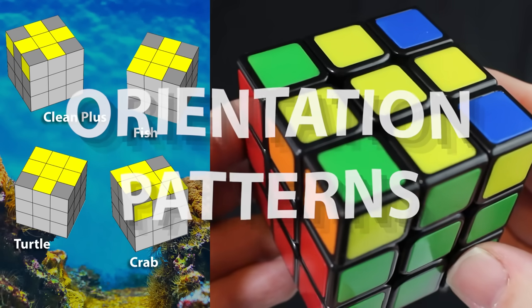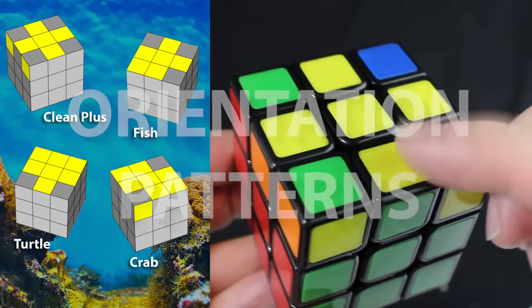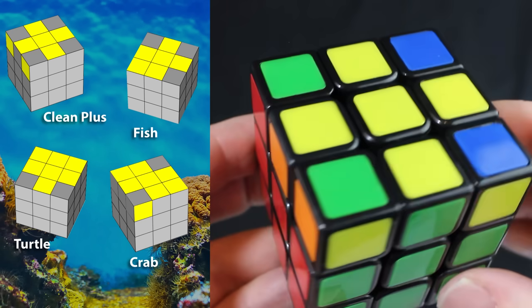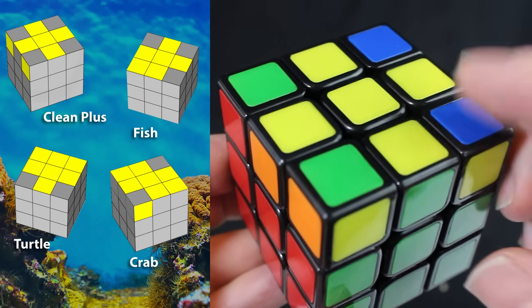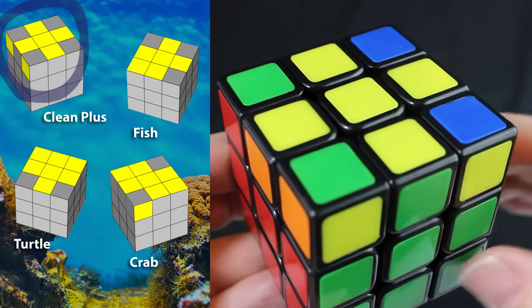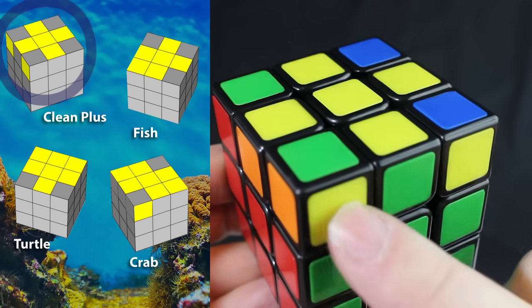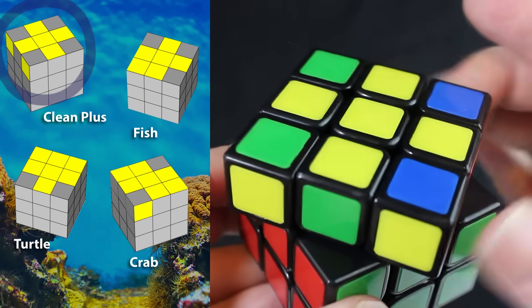Before we do the moves for the yellow fish, let's take a look at the top of the cube. What pattern do we have and does it match the pattern in these graphics here? So this one is called the clean plus. If you get this one, make sure that these two dots are moved to the left side like so.